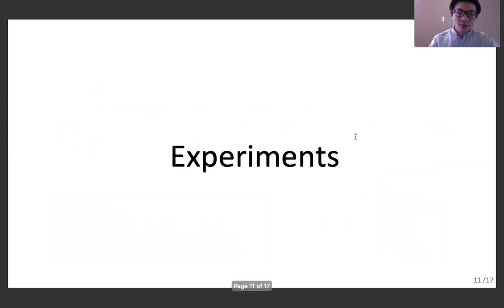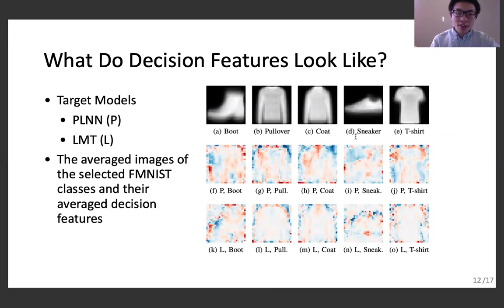In our first experiment, we visualize the decision features of a piecewise neural network and a logistic model train. The first row of the figure shows the averaged images of the selected F-MNIST classes. The second row shows the average decision features of a piecewise linear neural network, and the third row shows the average decision features of a logistic model train. The red and blue colors indicate features that contribute positively and negatively to the target output. It is clear that the decision features highlight the image parts with strong semantical meanings, like the heel of boots and the shoulders of pullovers. It also shows that comparing to the logistic model train, the neural network captures more details of the objects.